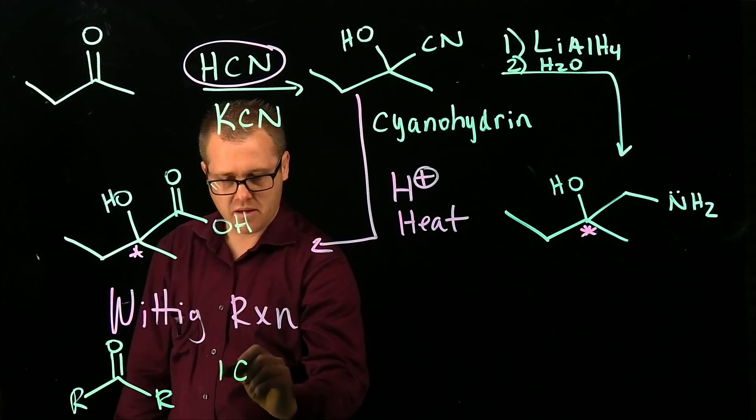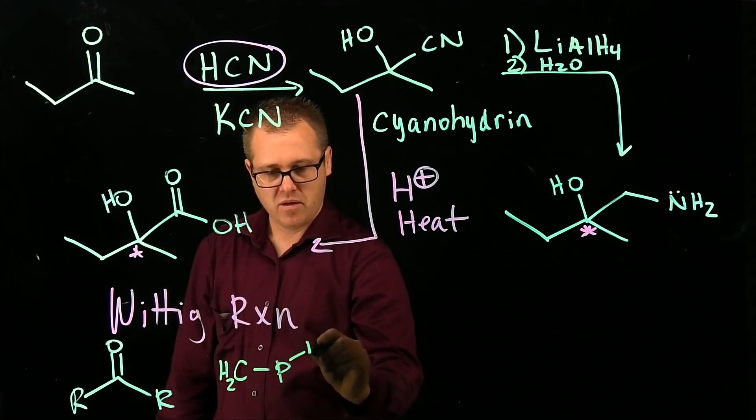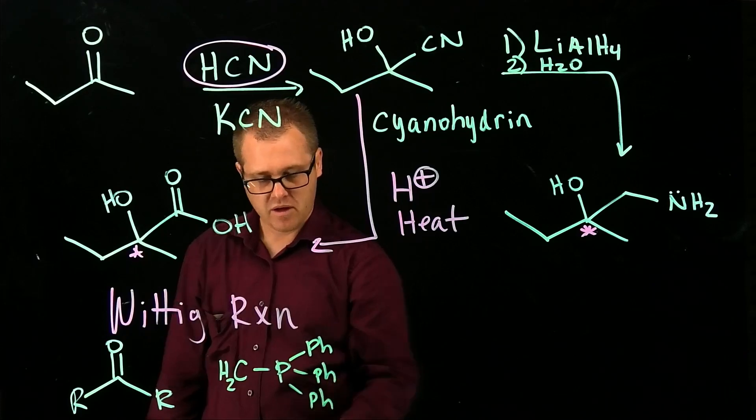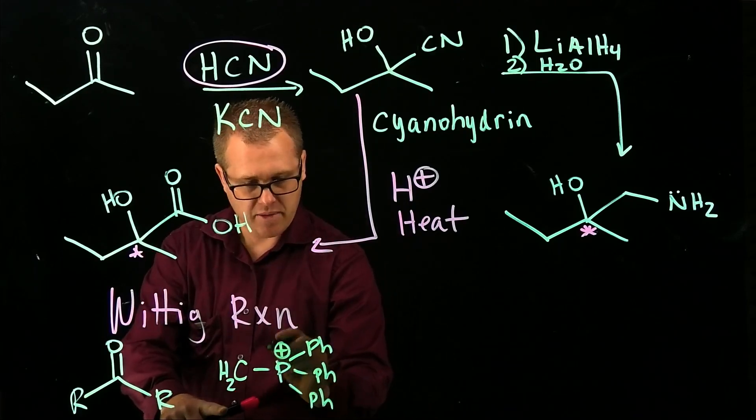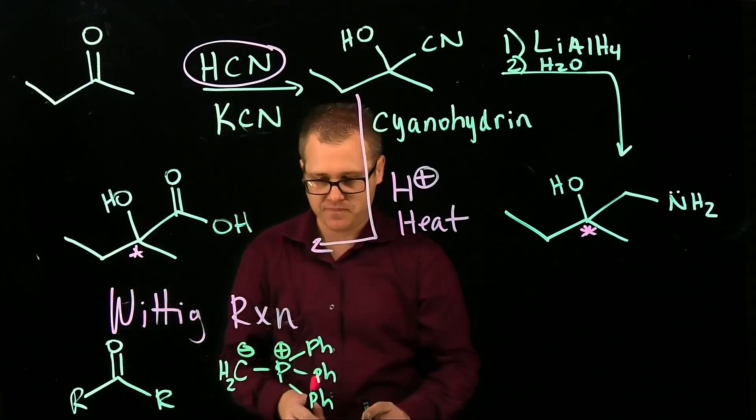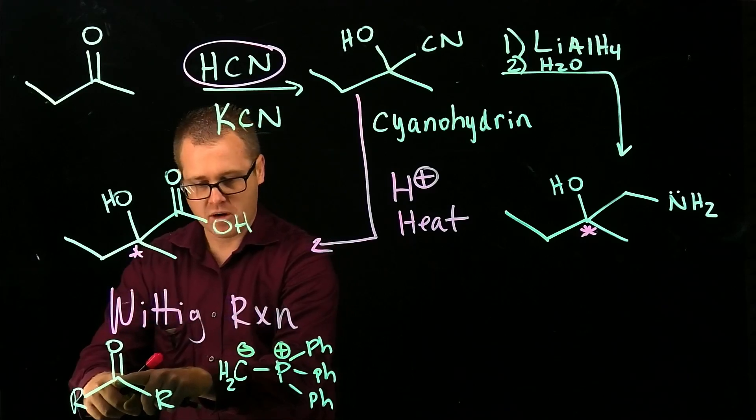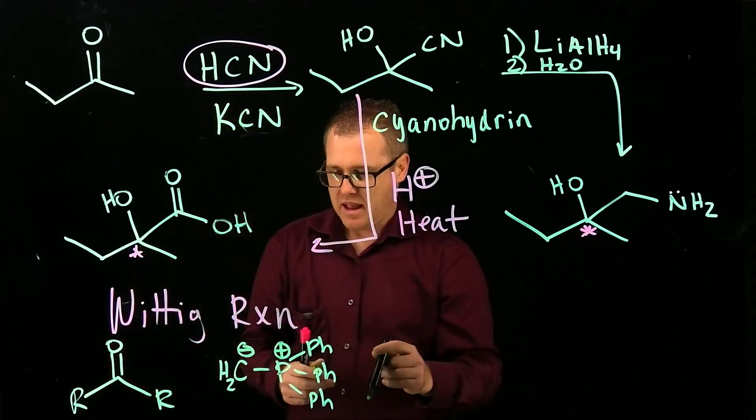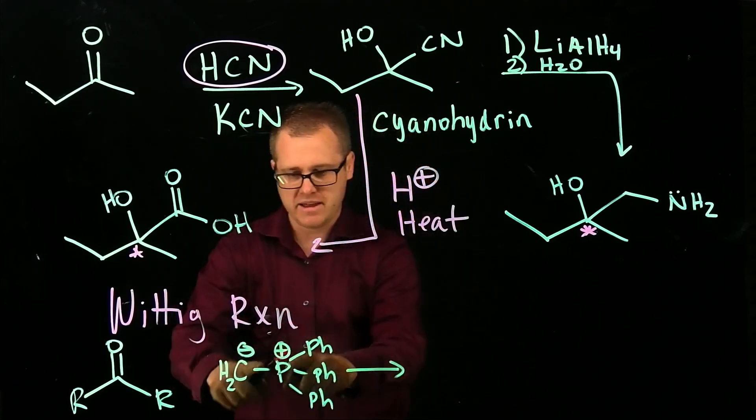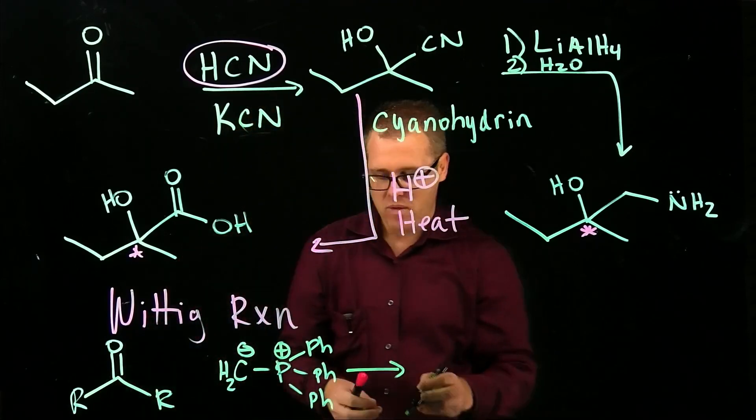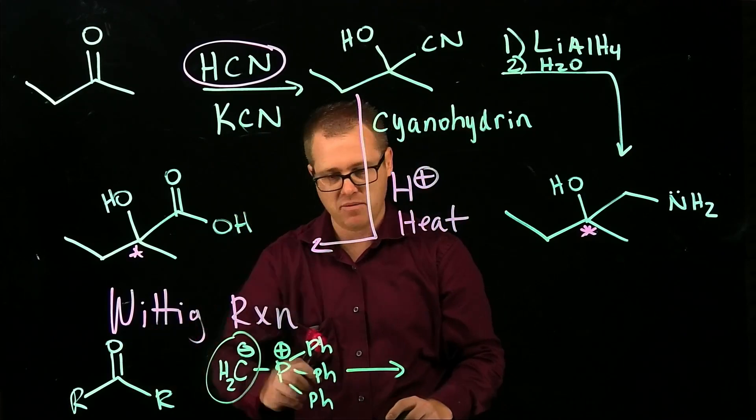So we have a carbon bonded to a phosphorus atom, which is then bonded to three benzene rings. And this particular compound is going to have the positive charge on the phosphorus and a negative charge on the carbon. And now this carbon is electron rich, so it can react with the electron-poor carbonyl carbon. So we do this reaction, we take this species, ketone or aldehyde, and watch what happens.